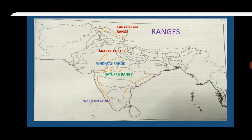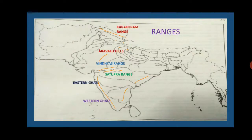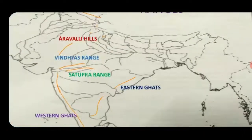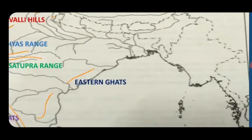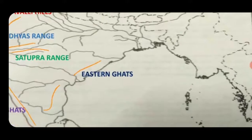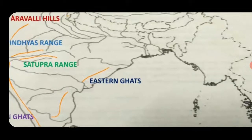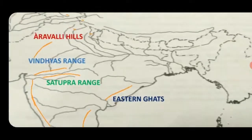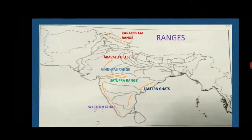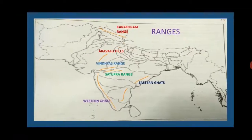Western Ghat runs from below the Tapti River to the southern part. When you draw it, it will only touch the origin of the river, not over the river — it is a continuous ghat. Next is the Eastern Ghat, which is a discontinued ghat, and is a little bit away from the coastal area.